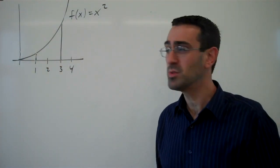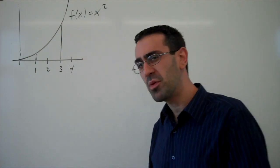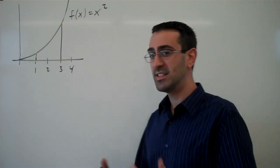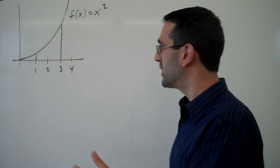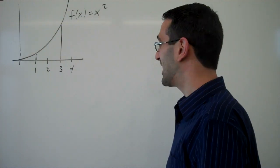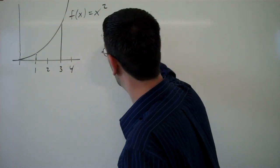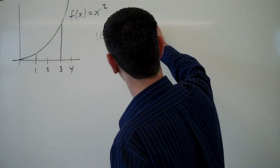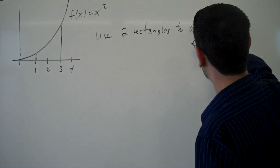Now, we don't really know how to do that, so we say, well, how can I approximate the area? So we're going to start with approximations. The easiest shape to find the area of is a rectangle, so maybe we can approximate our function with rectangles. Then we've got to decide how many rectangles we're going to use. Let's do a simple case first and use two rectangles to approximate the area.